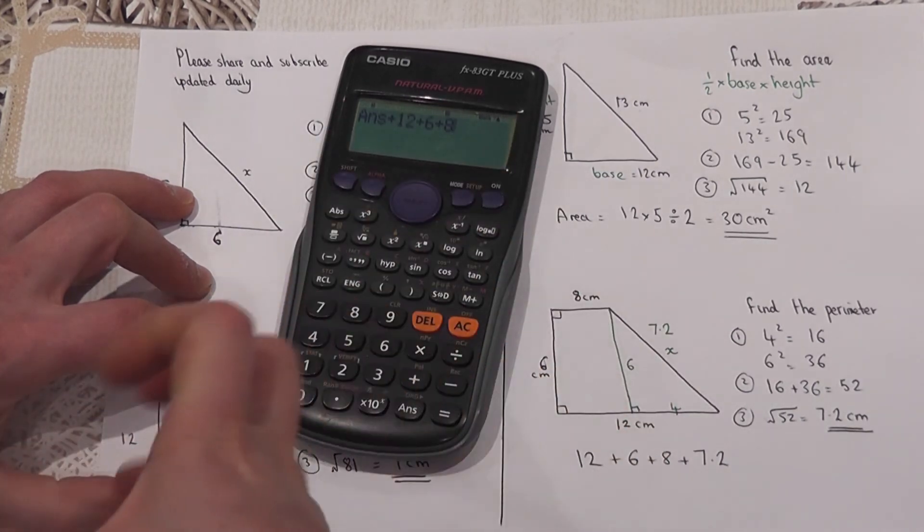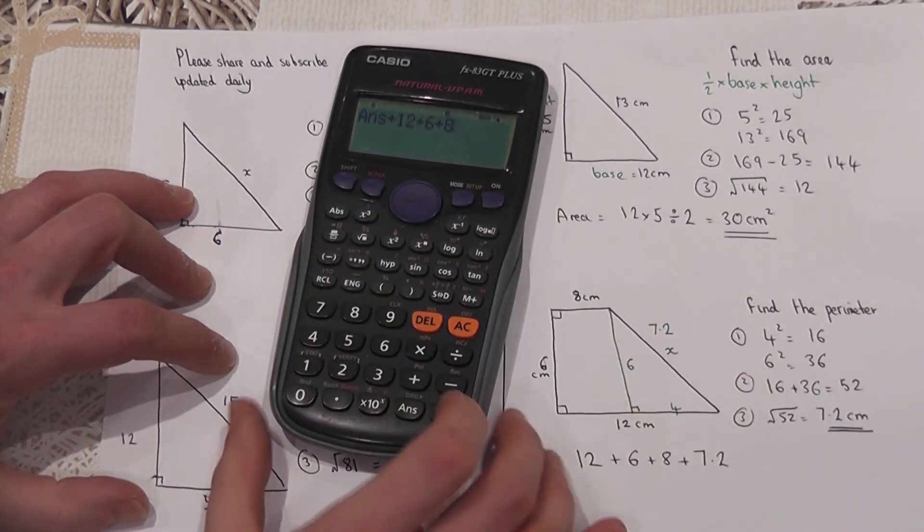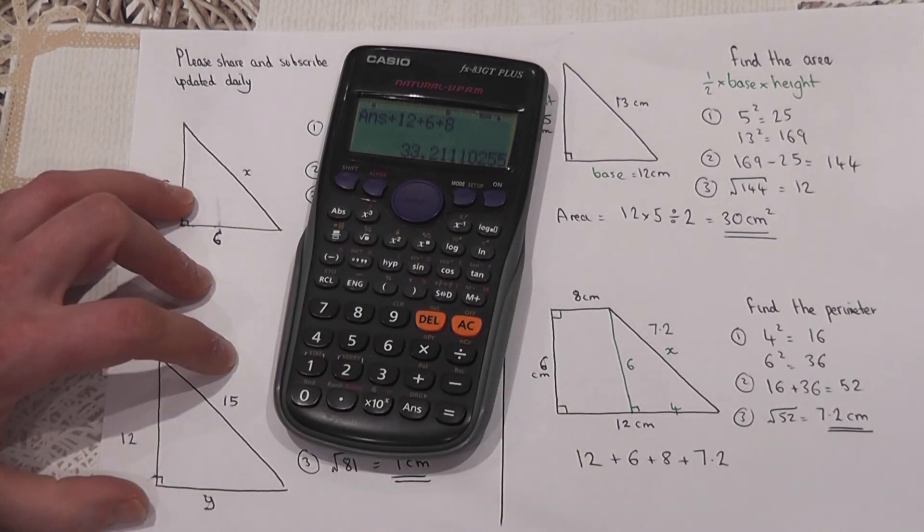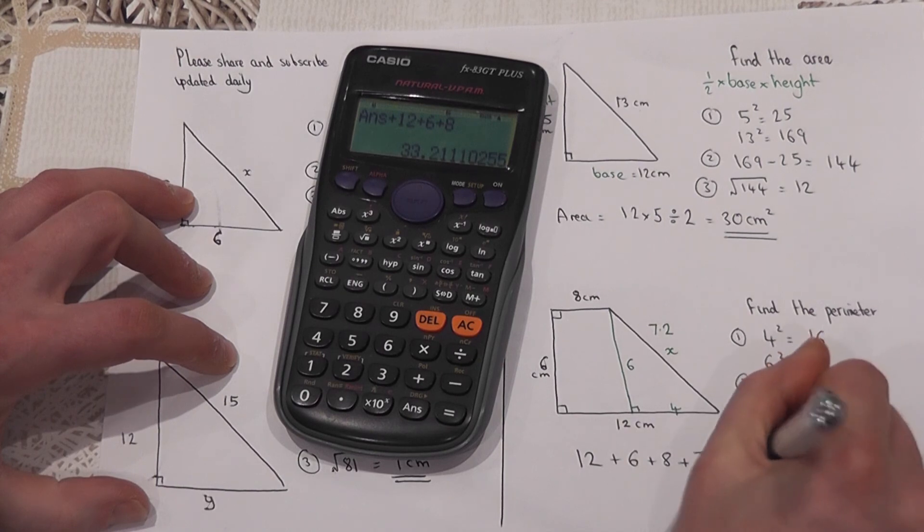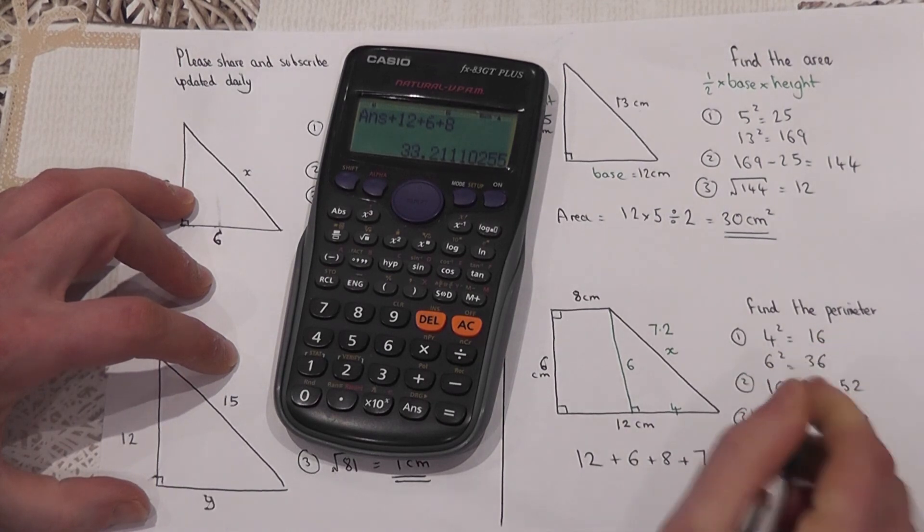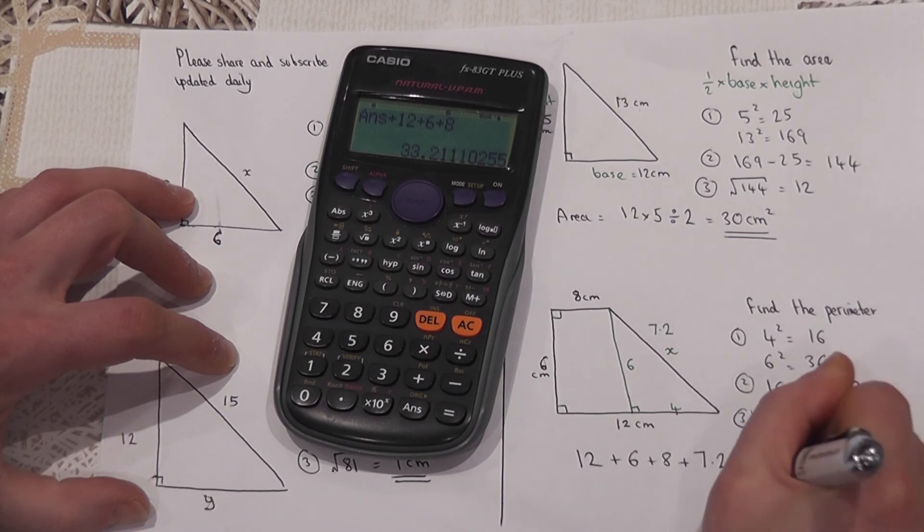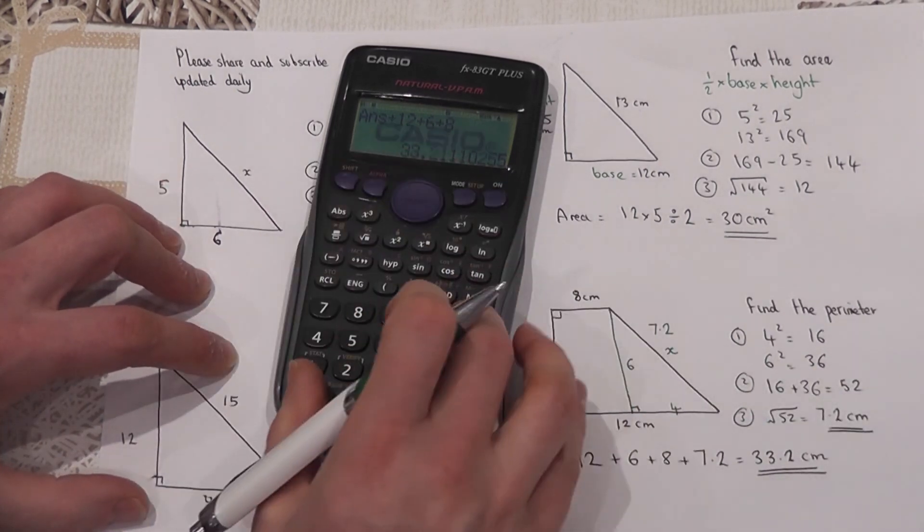This ensures that whatever the situation, especially with more complicated values, you get an accurate answer. So I get 33.2, and it's perimeter, therefore it's a length, so it is centimeters.